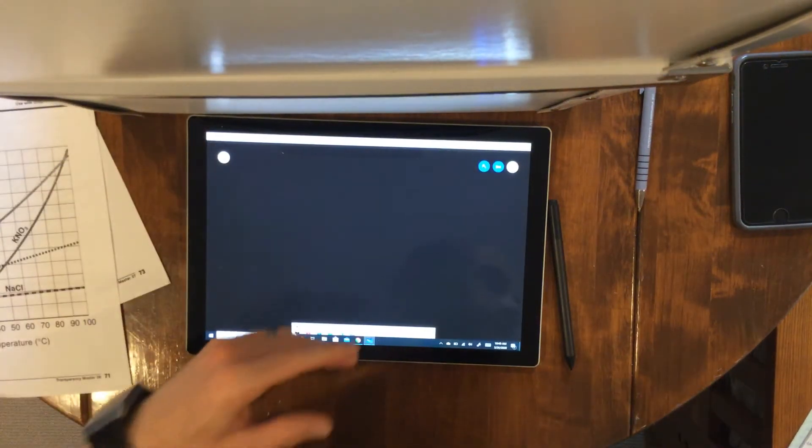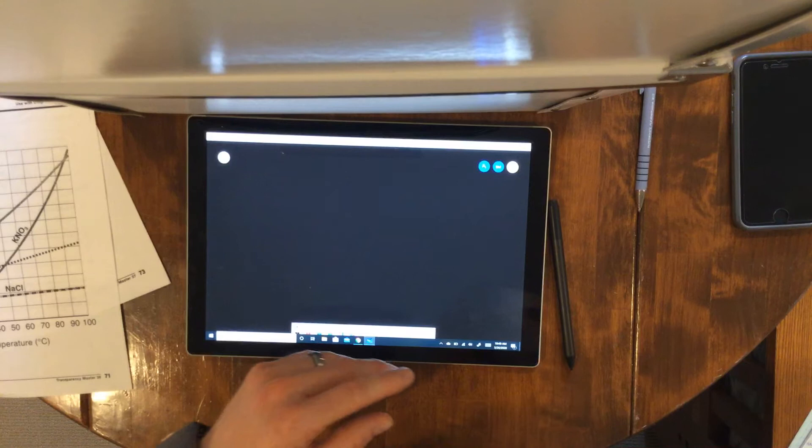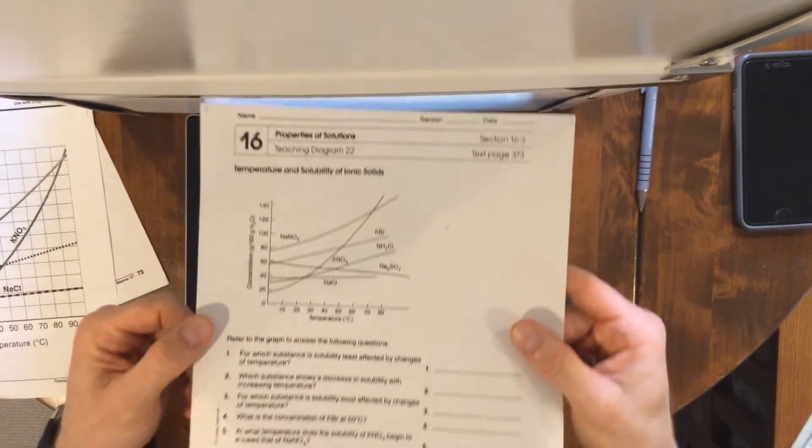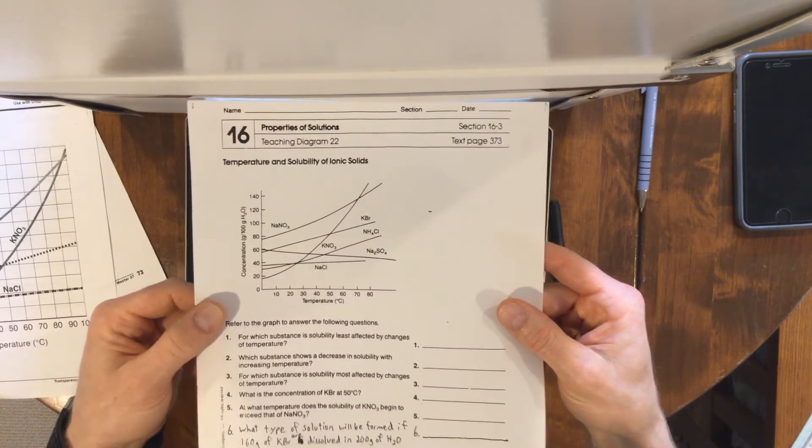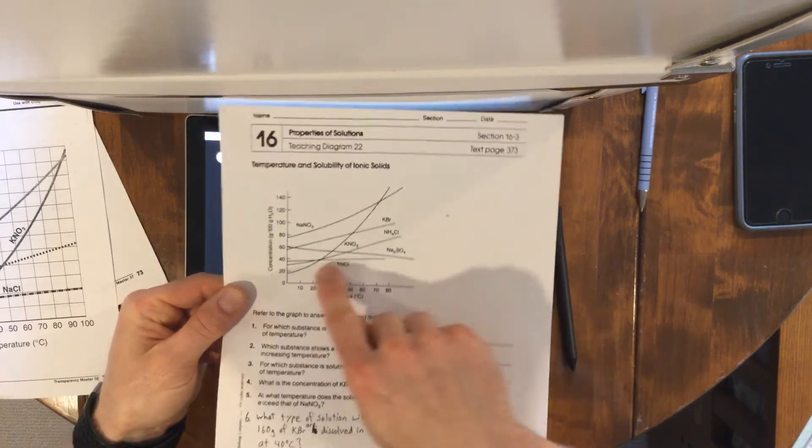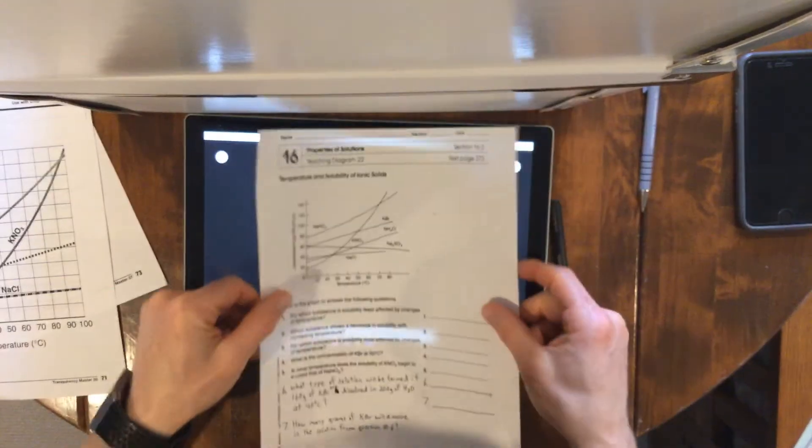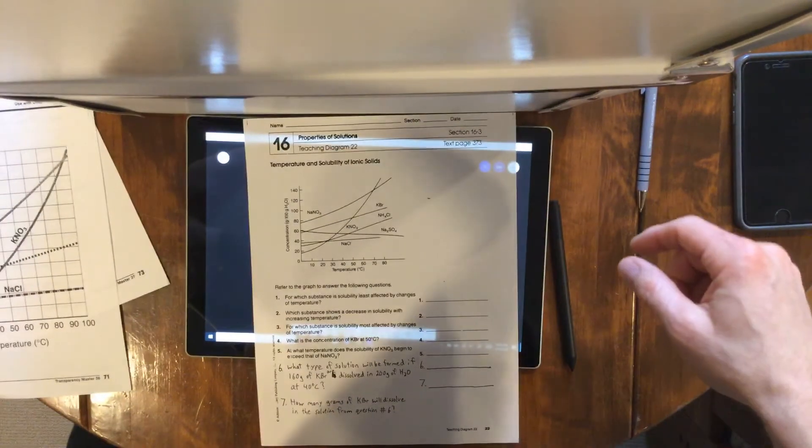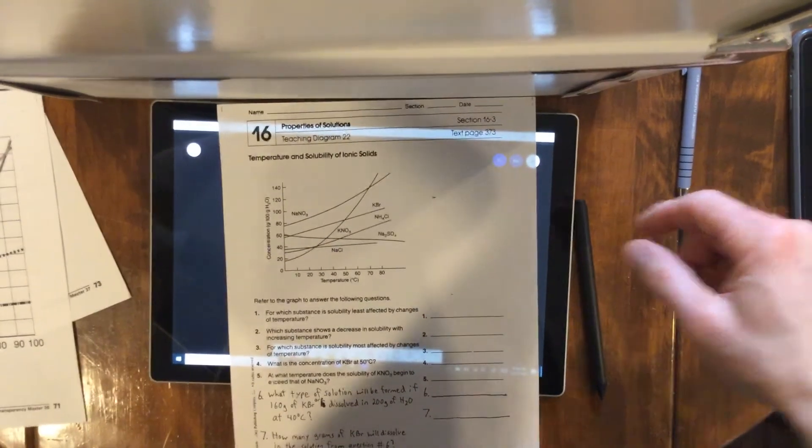Alright, I'm back. Video number two. This is due today. For which substance is solubility least affected by changes of temperature? That would be NaCl because that one's very flat.